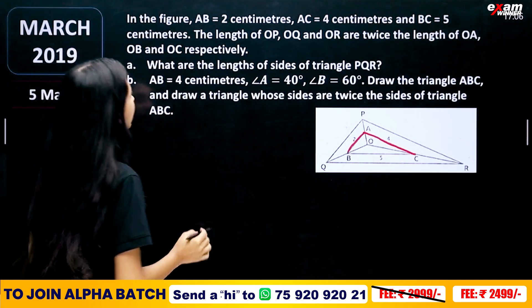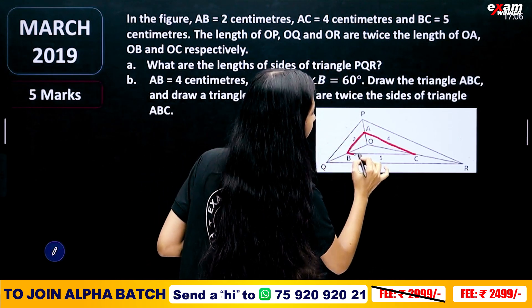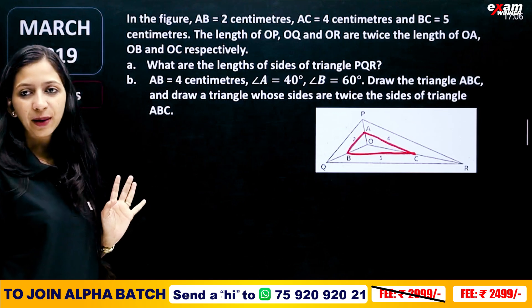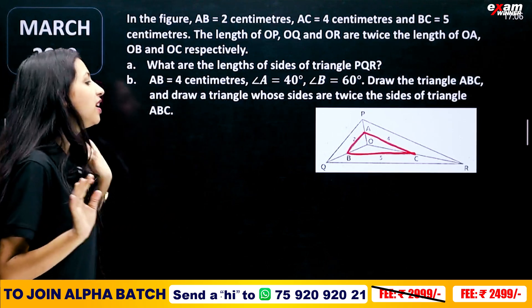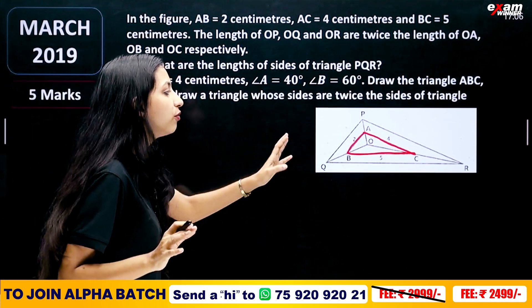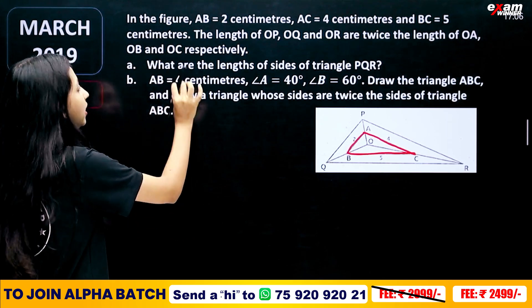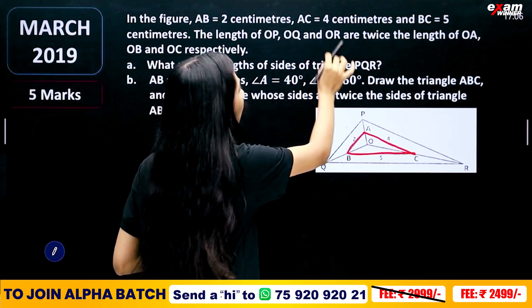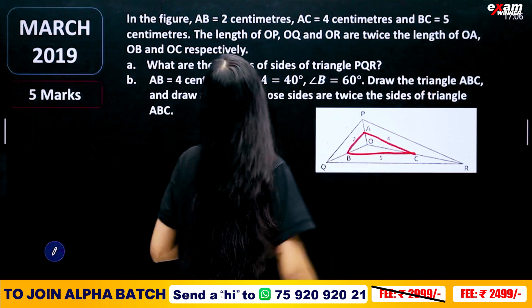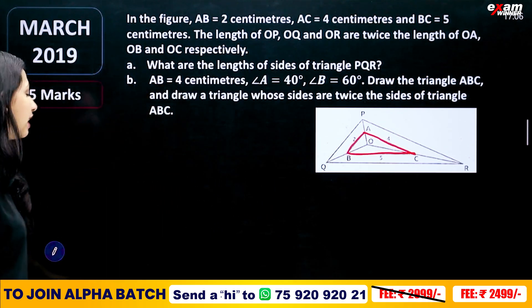BC is 5cm. So all the sides are 2, 4, and 5. The length of OP, OQ, and OR are twice the length of OA, OB, and OC respectively.